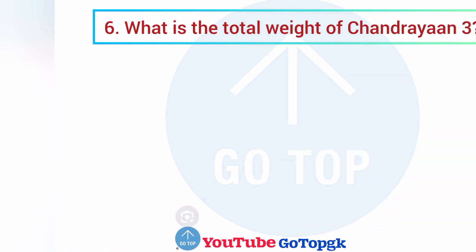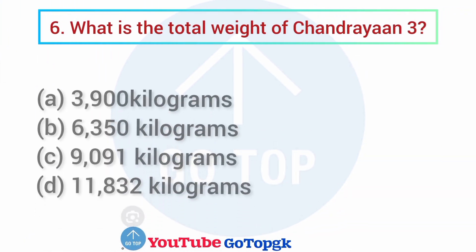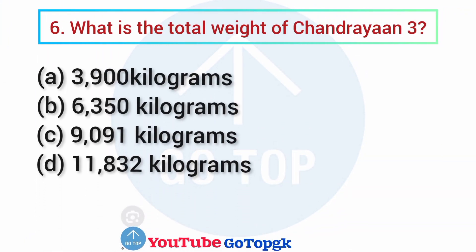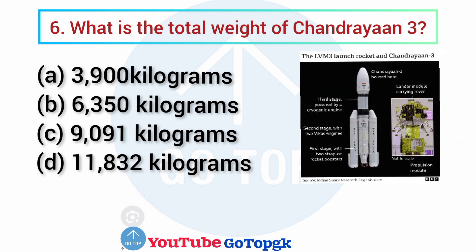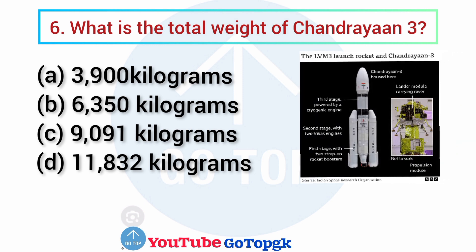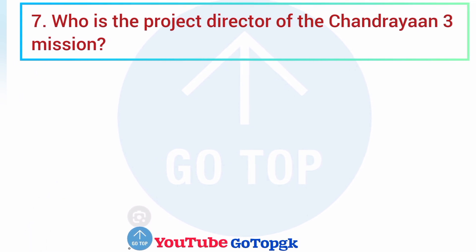Question No. 6. What is the total weight of Chandrayaan-3? Options: A. 3,900 kilograms, B. 6,350 kilograms, C. 9,091 kilograms, D. 11,832 kilograms. Your correct answer is option A: 3,900 kilograms.